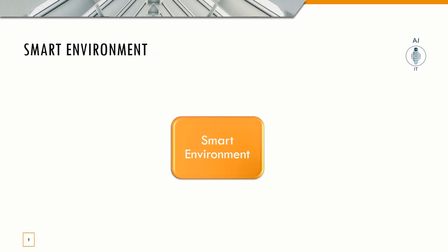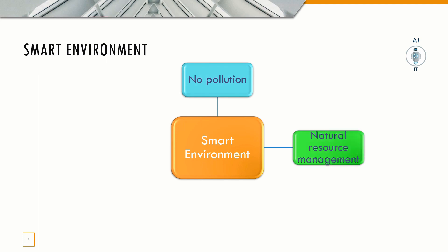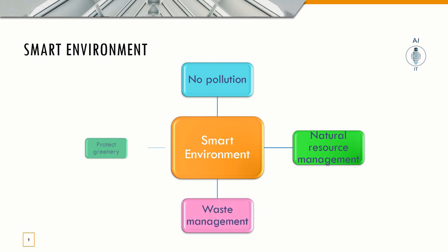The next component is smart environment. This describes how the municipal government manages the environment of the city with no pollution, proper natural resource and waste management. It should also focus on greenery in every part of the city and protect the existing greenery.